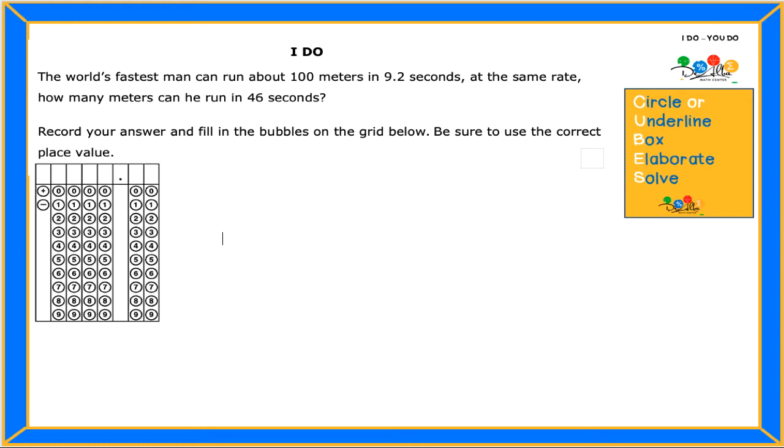Okay, so let's use the strategy of CUBES that we have on the right side. Let's get started by identifying important information. Right here we have a number and what it represents. Now I have another number here and what it represents, which is time. Then I have a keyword here that says rate, and I do highlight that one because when it says rate, I can do ratio tables, proportions, and I know how to work them out.